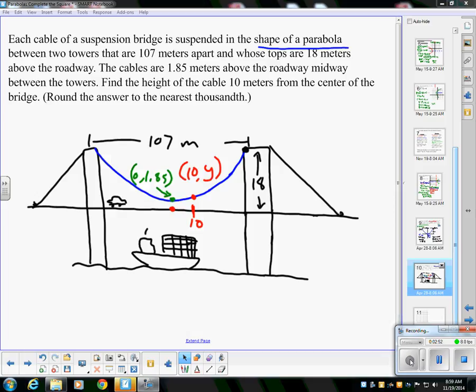In green you have (0, 1.85), that's the vertex of the parabola. I know that because the vertex is always going to be at the lowest point, and it says the cables are 1.85 meters above the road midway between the towers. The suspension bridge halfway between the towers is always the lowest point of the cable, always in every case.